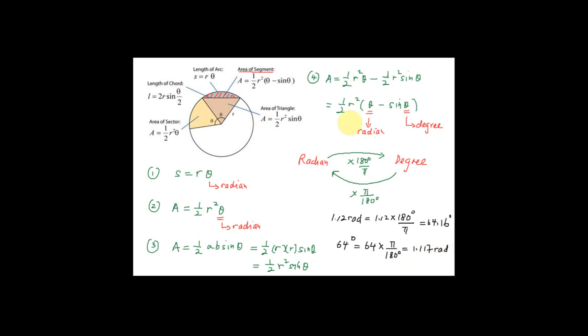So remember, to find the area of segment you use half R square bracket theta minus sine theta. This theta here is in radian, while in the sine theta part the theta should be in degrees.